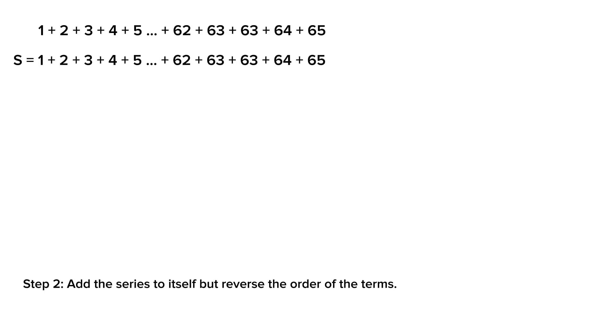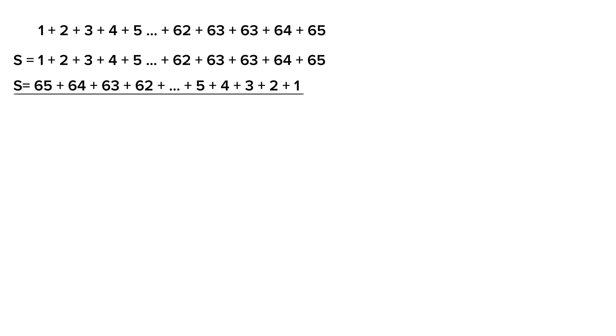S is the sum. Step two, add the series to itself but reverse the order of the terms, 65 all the way to 1. Step three, add the two equations and solve for the sum.